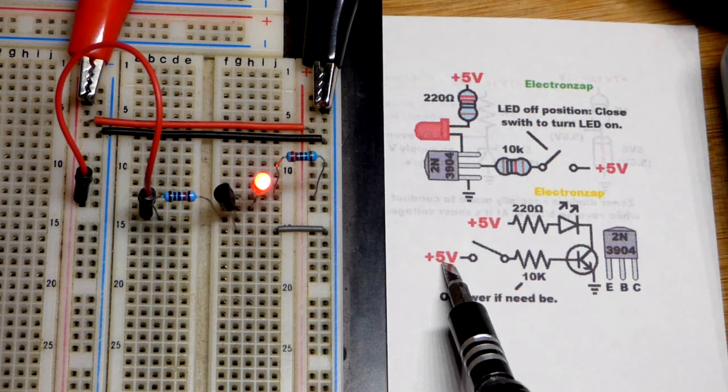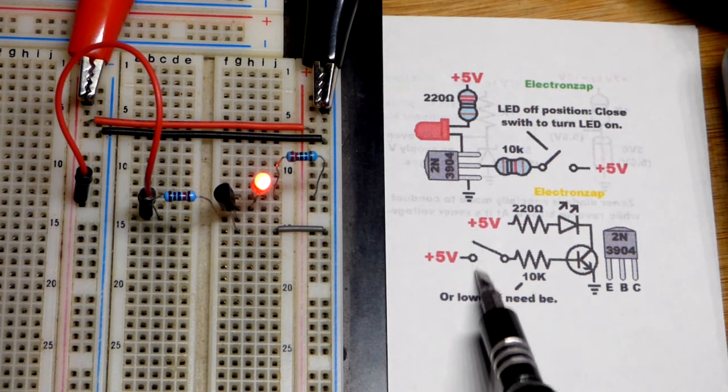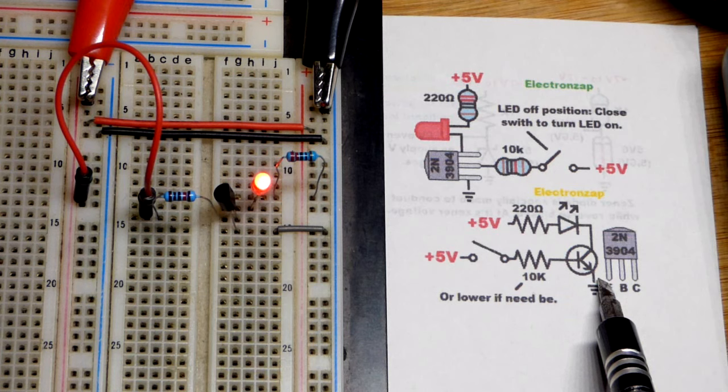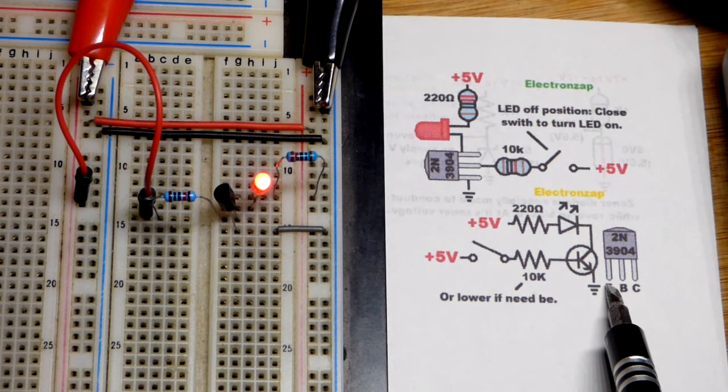After that point you need to limit the current with a resistor. So it would be probably 4.4 volts across the resistor when the switch is closed. The other 0.6 volts being dropped there. And that will set the current.